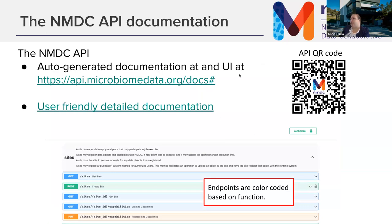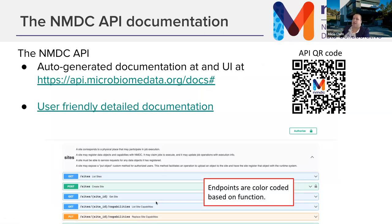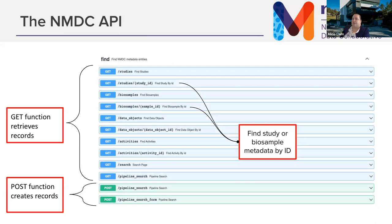Swagger UI has some auto-generated documentation that can be minimal, so we've also put together more user-friendly, human-written documentation with examples. GET endpoints are used to retrieve records — that's mostly what we're interested in today. Internally we also have POST endpoints for uploading information when adding biosample records, workflow records, etc., but we'll focus on the GET endpoints.